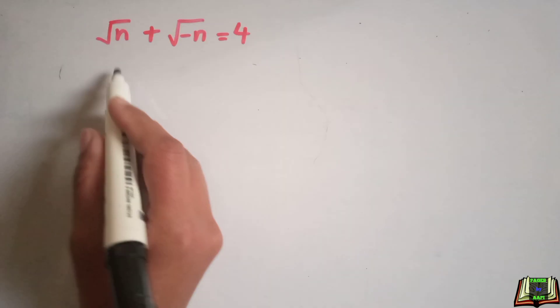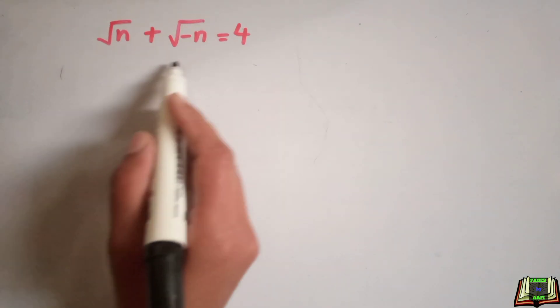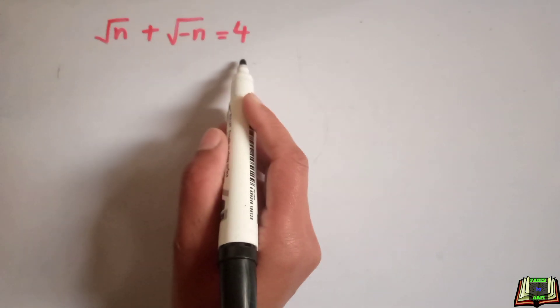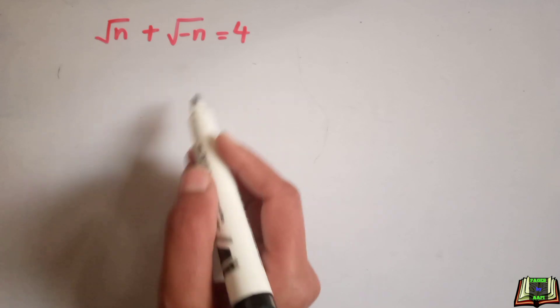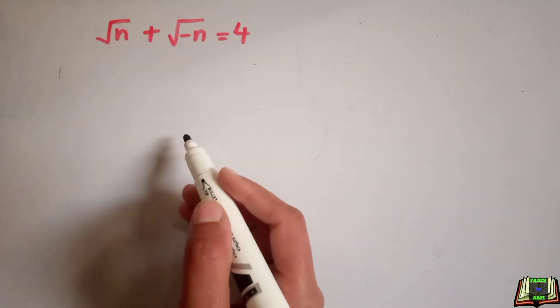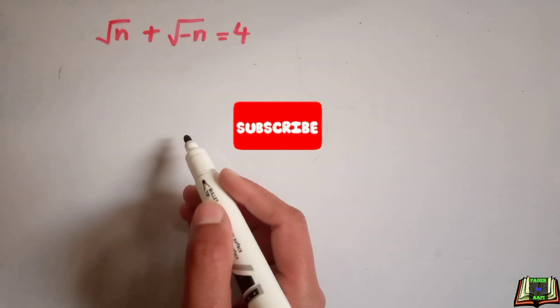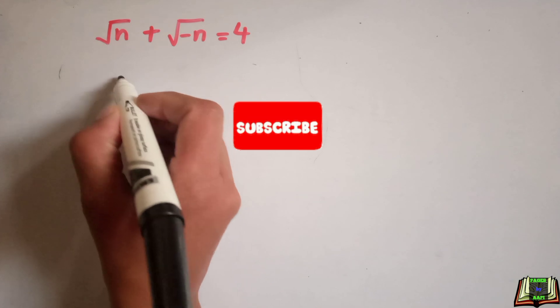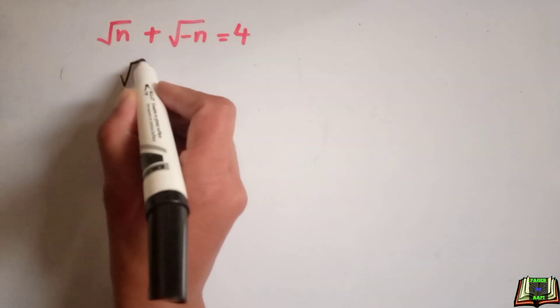Welcome all of you. If square root of n plus square root of minus n is equal to 4, then how can we get the value of n? In this radical problem, we are going to solve this.